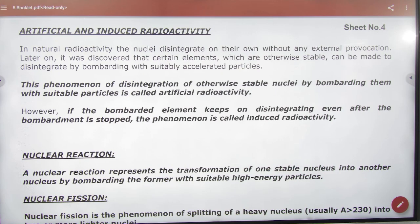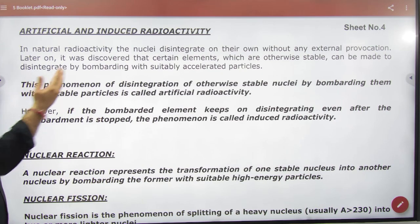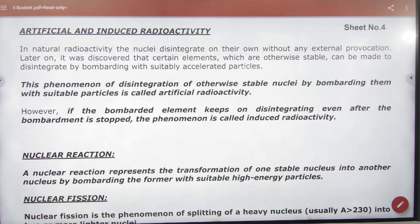And if it has been unstable, it is artificial radioactivity. Now because it has been unstable, radioactivity will start. We say radioactivity has been induced. It has been induced, it has been started. So this is artificial and induced radioactivity.